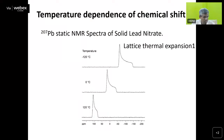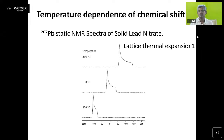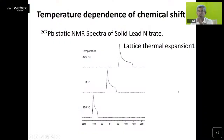In magic angle spinning NMR, the interactions get averaged out so we get very sharp lines. In the static NMR of the solid without spinning, we get a broader pattern. The principal components delta-11, delta-22, and delta-33 can be measured. When delta-11 equals delta-22, we have an axially symmetric system. What we see is that at 120°C the line width is very small — meaning the anisotropy is less — and at minus 120°C the anisotropy increases significantly.